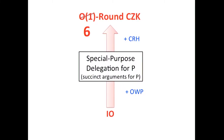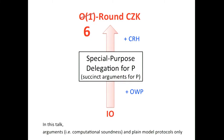For the entire talk, I'm not going to care about concrete round complexity, but if you care to know, our protocol can be compressed into six rounds. Also, let me say straight away that I will only talk about computational zero-knowledge argument systems, and plain model constructions only.